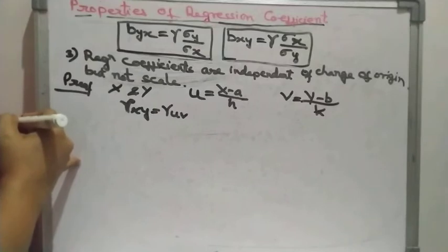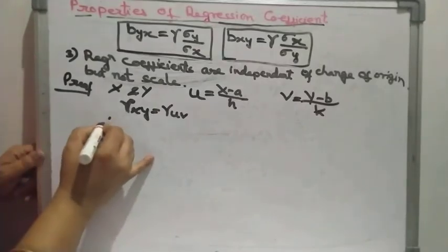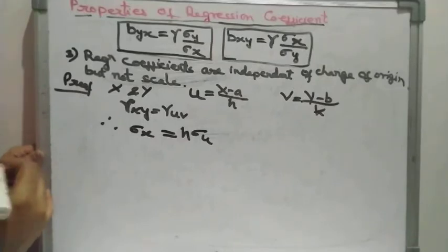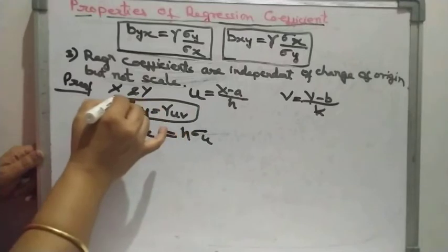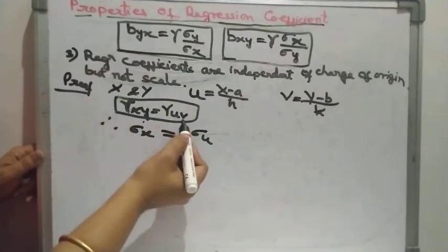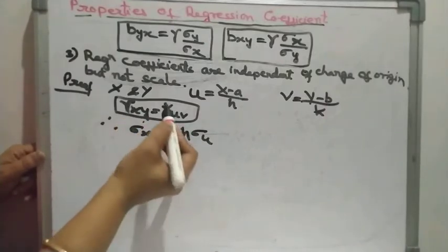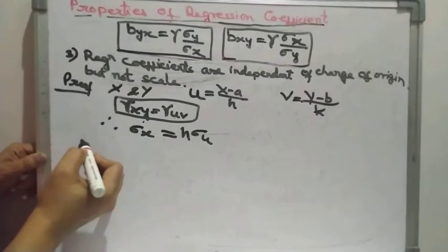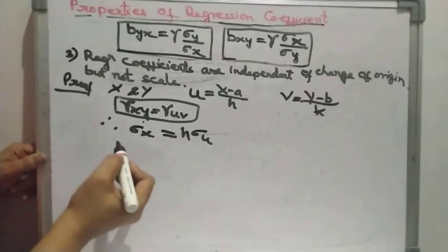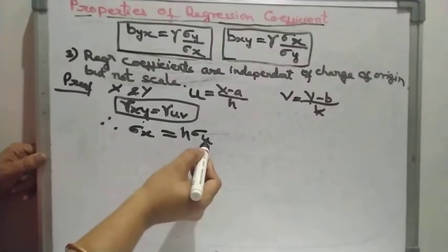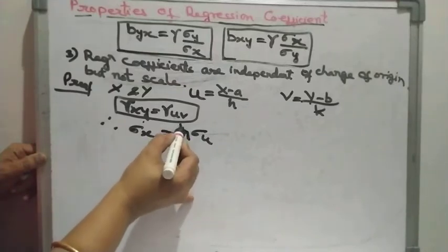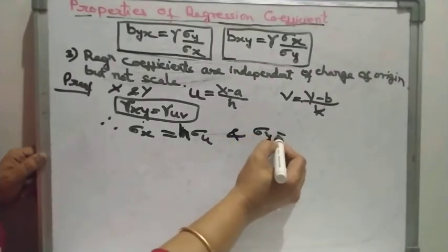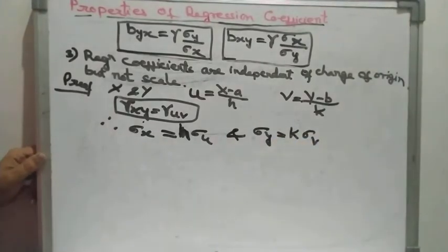We know from correlation coefficient properties that r_xy = r_uv, since correlation is independent of change of origin and scale. Also, standard deviation is independent of change of origin but not scale, so σ_x = h·σ_u and σ_y = k·σ_v. We have taken this from our previous knowledge of standard deviation properties.